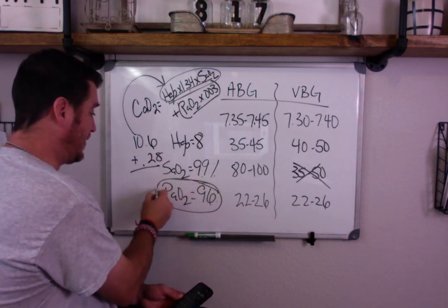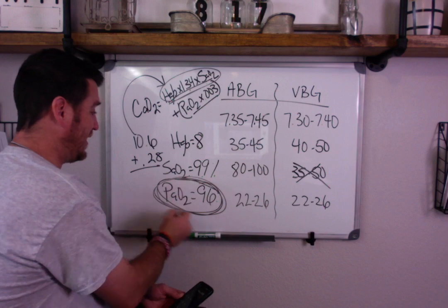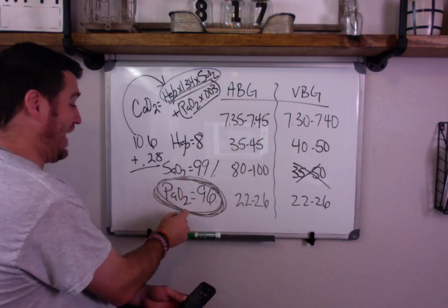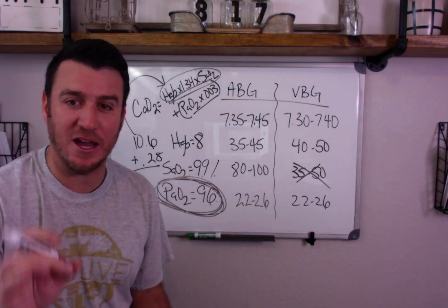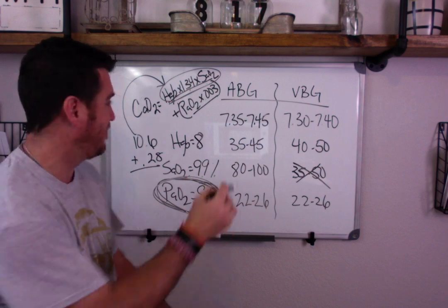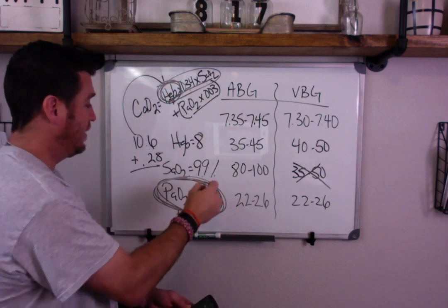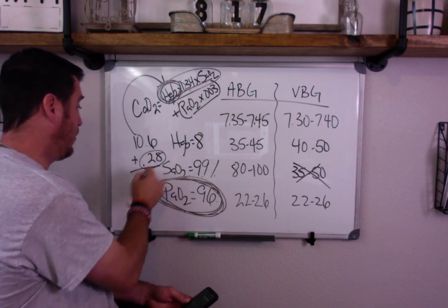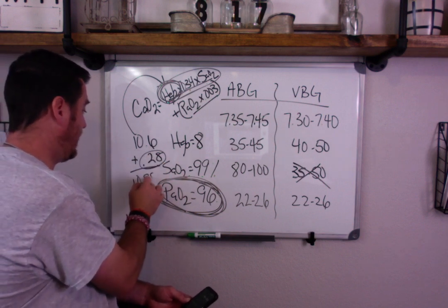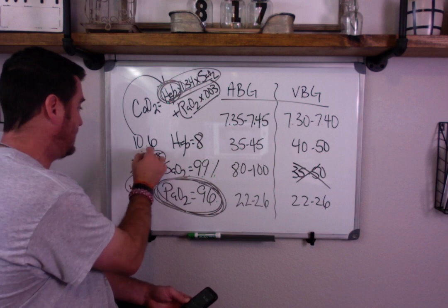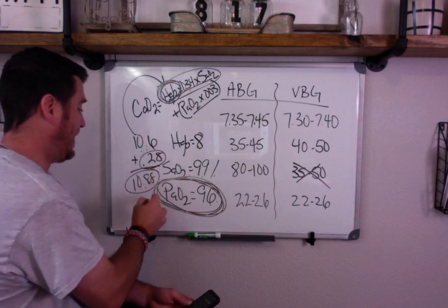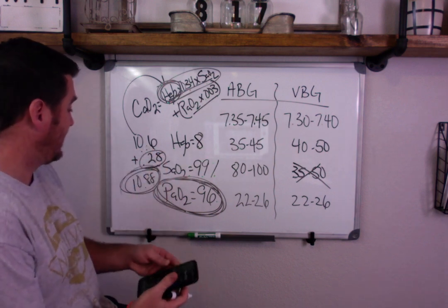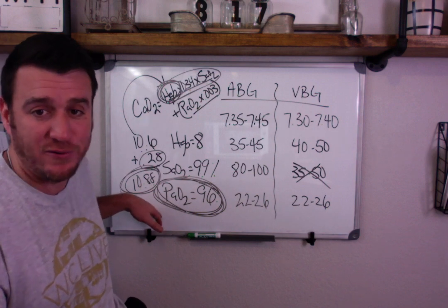Now we're going to add to that PaO2 times 0.003, 96 times 0.003. Plus 0.28. So from just the PaO2 standpoint, not talking about bound to hemoglobin, only adds 0.28. We go from 10.6 to 10.88.